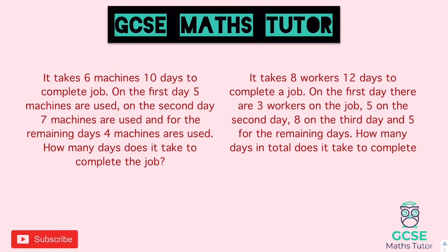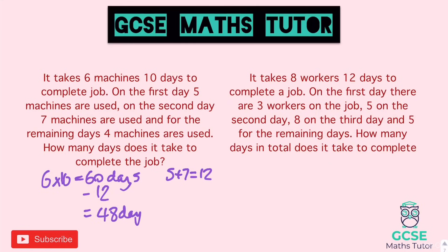Practice complex question one: six machines take 10 days, so six times 10 gives us 60 days for one machine. On day one there are five machines, on day two there are seven — so five plus seven means 12 days of work done. 60 minus 12 leaves 48 days of work remaining. With four machines for the rest, divide 48 by four, which gives 12 days. Add the initial two days and we get 14 days in total.